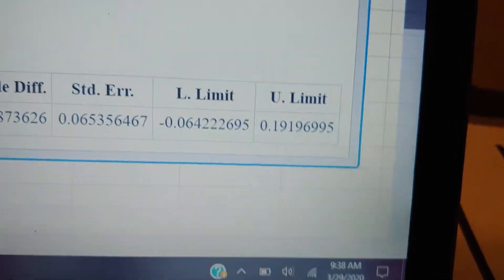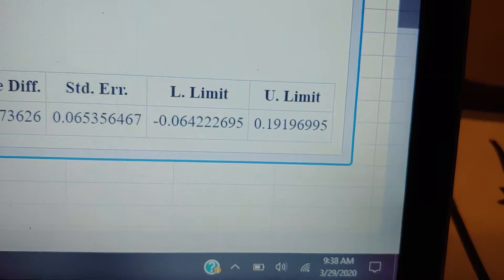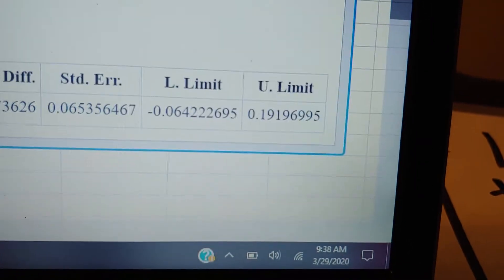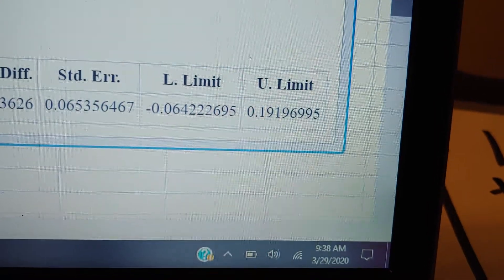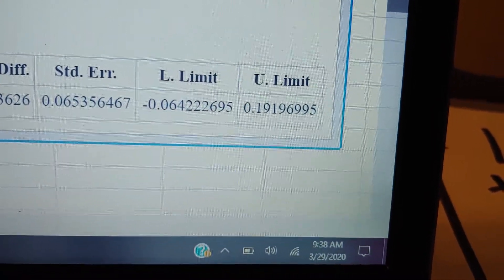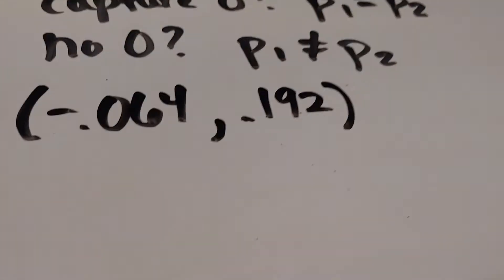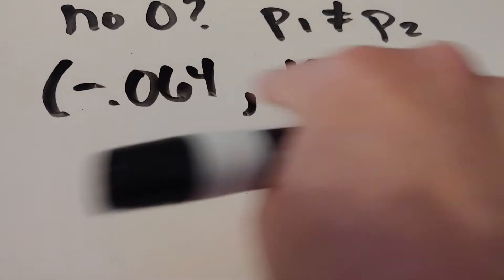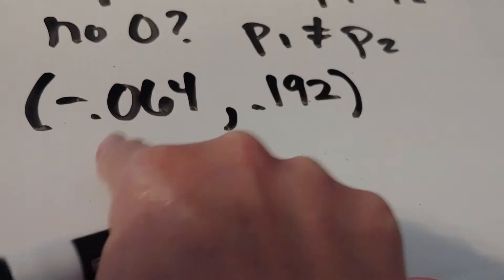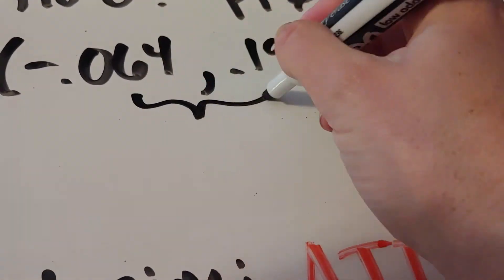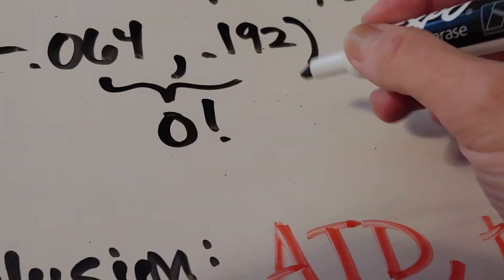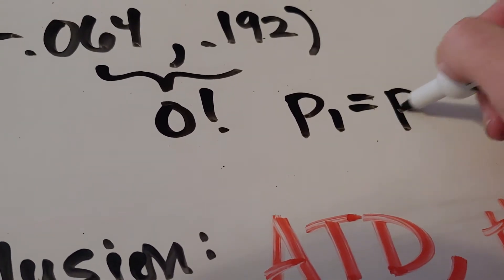When we go over there, we see my lower limit is negative 0.064. My upper limit is 0.192. And as I copy that down over here, you can see I go from negative to positive. So because I went from negative to positive, zero is in there. That means that the two are considered statistically the same.